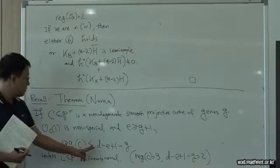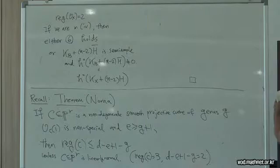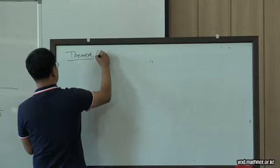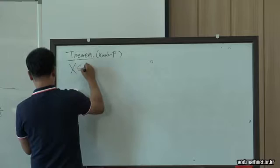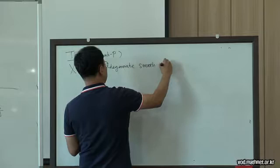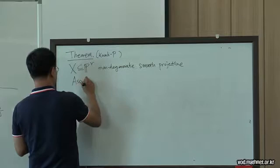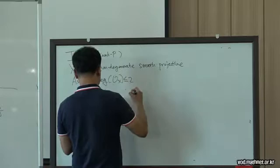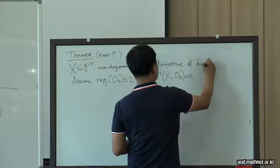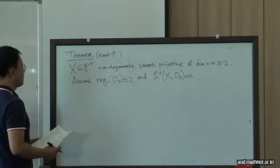The regularity of C is bounded by a smaller number. We can extend Noma's theorem to the 2-regular case: let X be a non-degenerate smooth projective variety with the regularity of O_X at most 2, H^1(O_X) = 0, and dimension at least 2. If co-dimension is at least 2G+1, then the same statement holds.